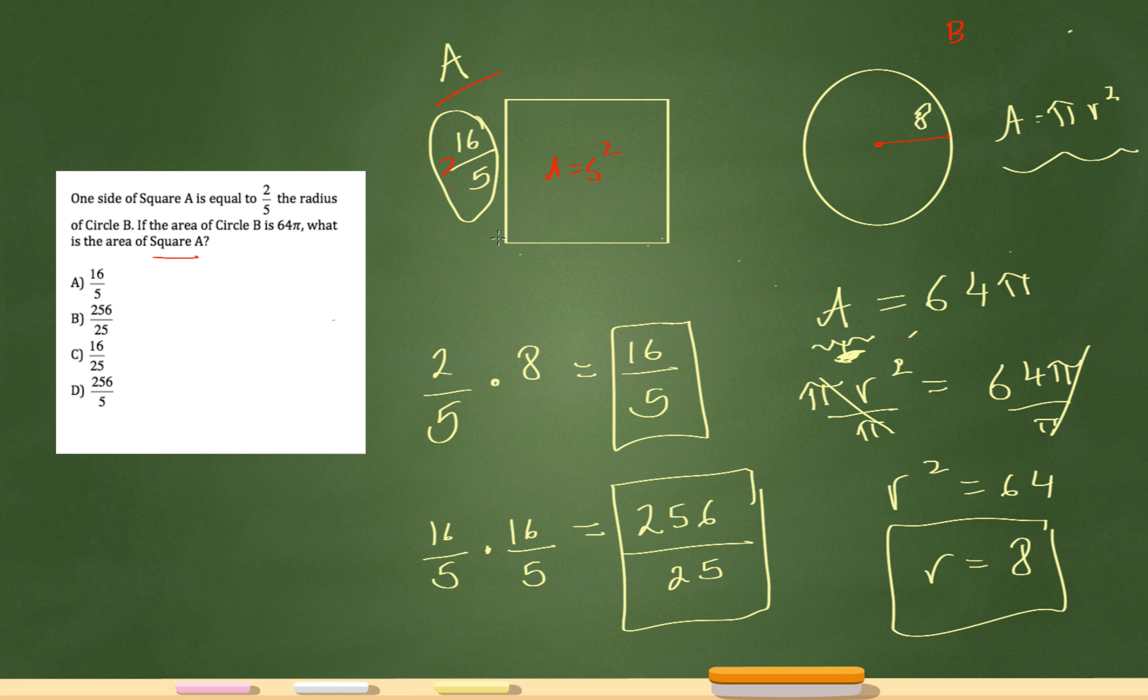The problem tells me that the length of the side of the square is two-fifths of the radius of the circle. So that will be two-fifths. Of just means multiply. So two-fifths times 8. And when you multiply fractions, you just multiply the numerator and the denominator. So 8 times 2 is 16. 5 times 1 is 5. So my length of the side of the square is 16 over 5.